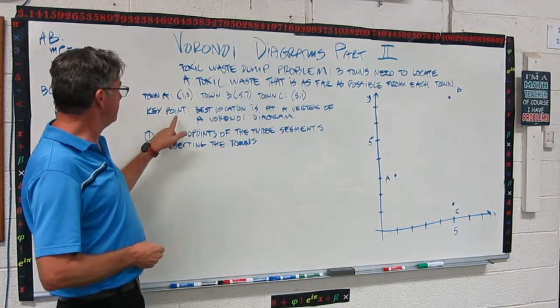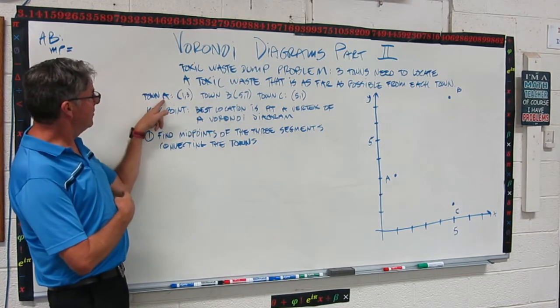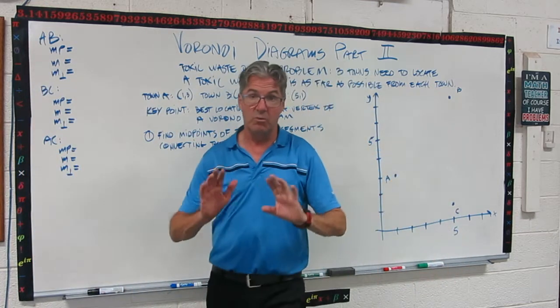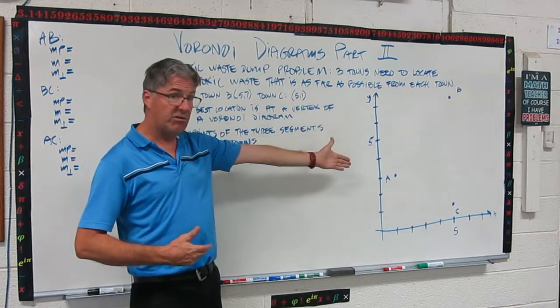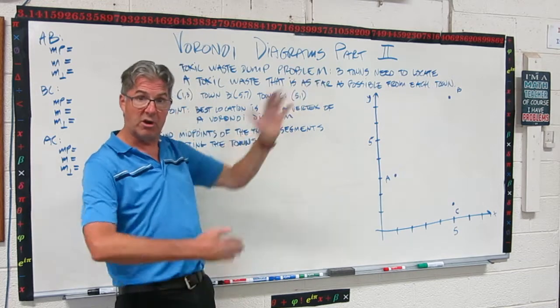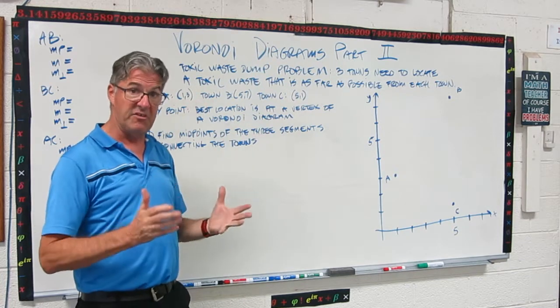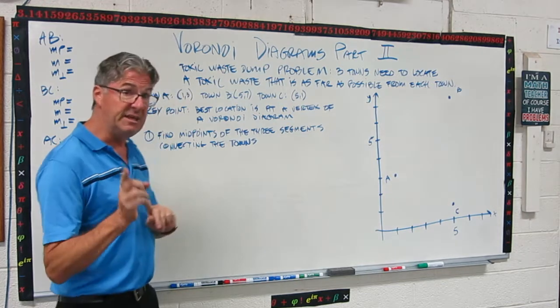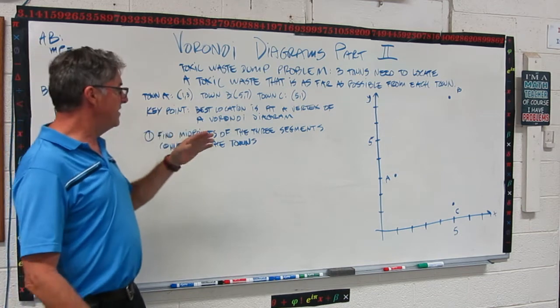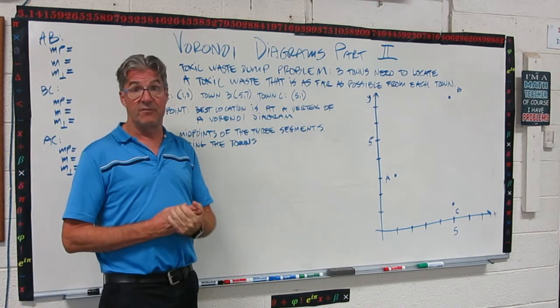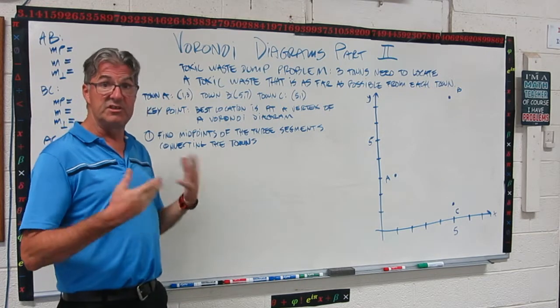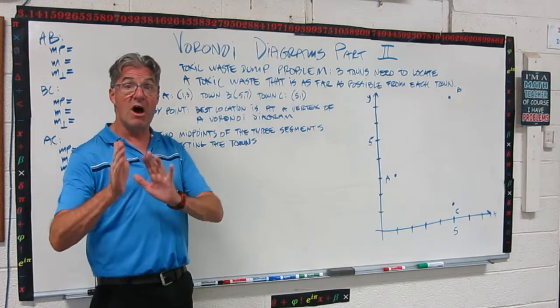We're assuming that these three towns need a toxic waste dump that's at least convenient for all of them. They could locate it way over here, but then that's kind of not super convenient. So we're going to look for a place in this area that's the best place for that toxic waste dump so that it's as far as possible from each of the three towns, but accessible because toxic waste isn't a good thing to be close to. So there's a key point here. The key point is that the toxic waste dump, the best location for it is where the boundaries of the Voronoi diagram intersect.